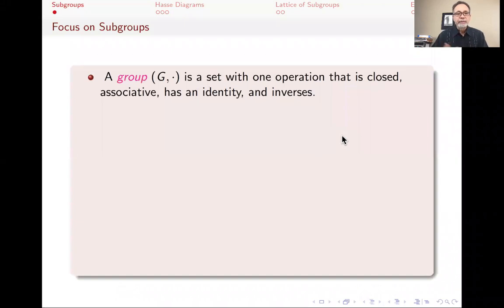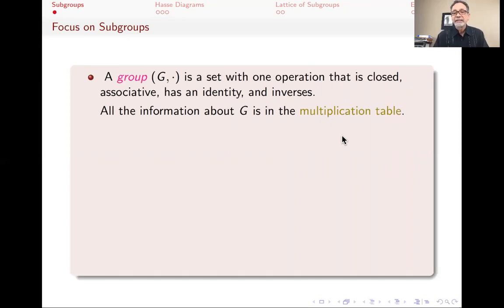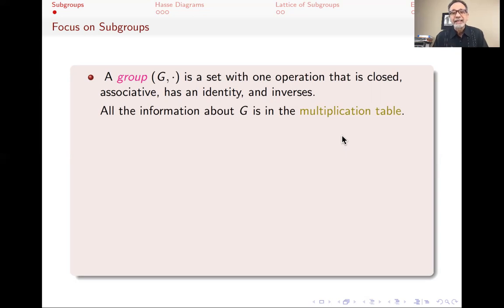A group, as we have been discussing in previous lectures, is just a set with one operation, and that operation is closed and associative. There's an identity, and every element has inverses. That's all there is to a group. As such, every piece of information you might want about a group is in its multiplication table. If you know the multiplication table and you're patient enough, you should be able to find all the information about the group. However, that's a super inefficient way of getting information about a group, especially if a group has many elements. That multiplication table is not organized in a way that's easy to glean information from, and that's what group theory is about — trying to figure out alternative ways rather than brute-forcing the multiplication table.